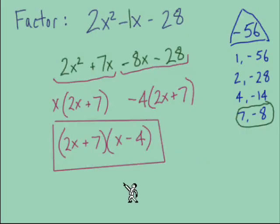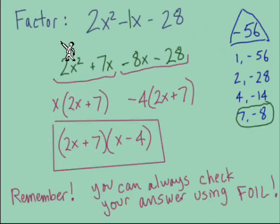I want to remind you that with all factoring problems, we have a way to check our answer. If you take your answer in factored form and do the multiplication—in this case, the FOIL method—you should come up with the three terms you started with: 2x² with -1x and -28.